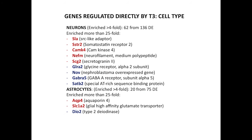For example, in neurons we have the somatostatin receptor, CaM kinase 4, and neurofilament up-regulated, or the glycine receptor and GABA receptor down-regulated. In astrocytes, aquaporin is up-regulated, etc.